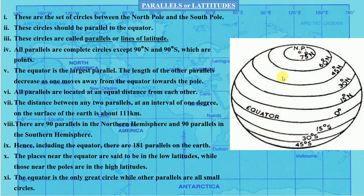There are 90 parallels in the Northern Hemisphere and 90 parallels in the Southern Hemisphere. The equator is the imaginary line which divides the earth into two hemispheres — the Northern Hemisphere and the Southern Hemisphere. Including the equator, there are 181 parallels in total.